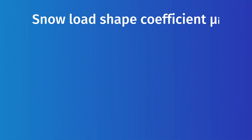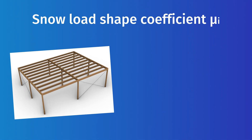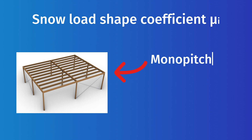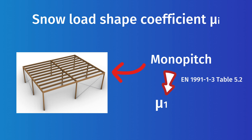The flat roof we're looking at in this example counts as a monopitch roof. Therefore, the value for the load shape coefficient µ1 is given in table 5.2 for an angle of 0 degrees as 0.8.